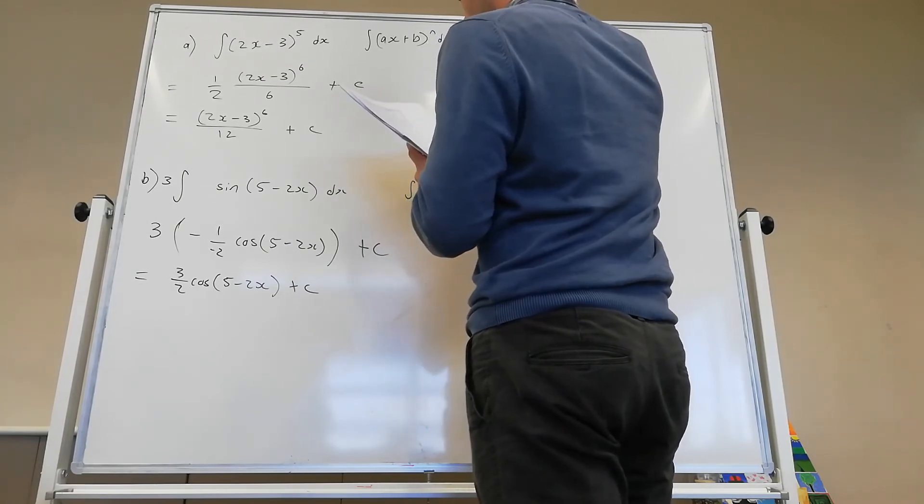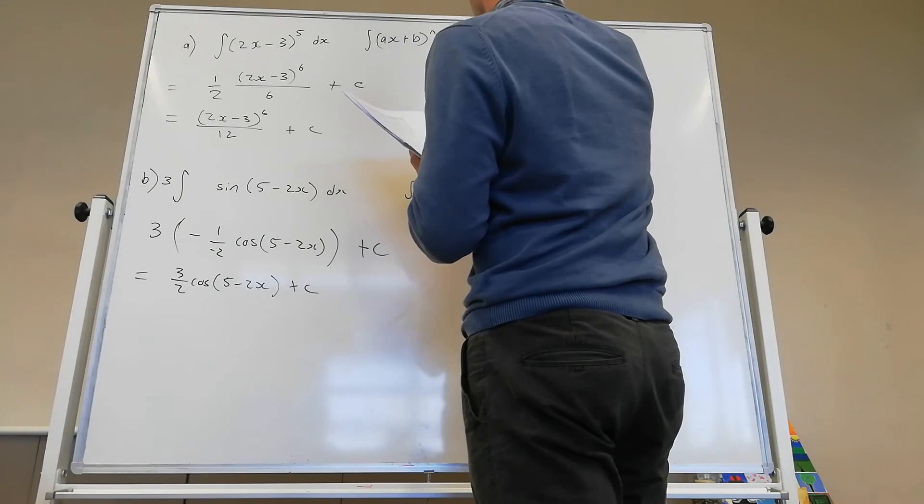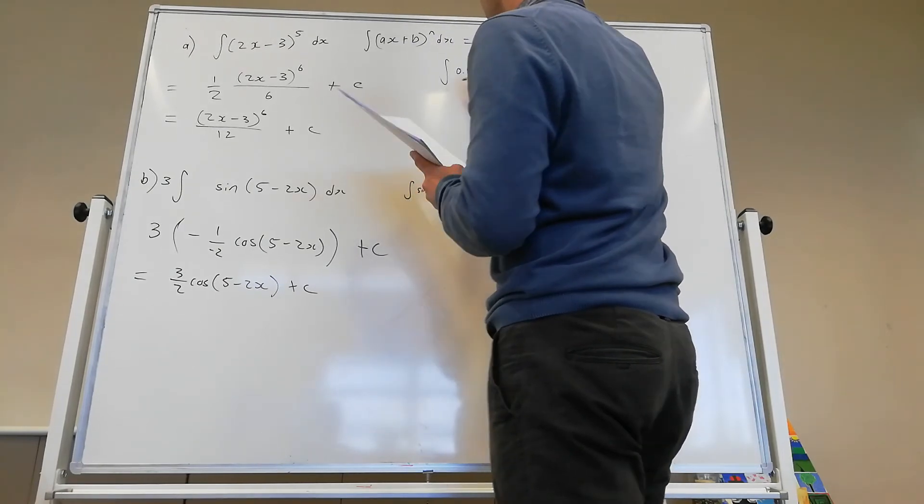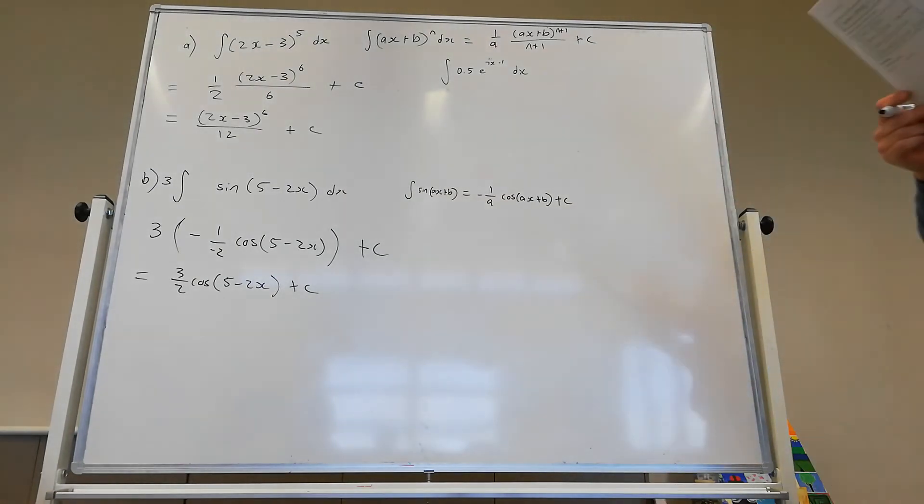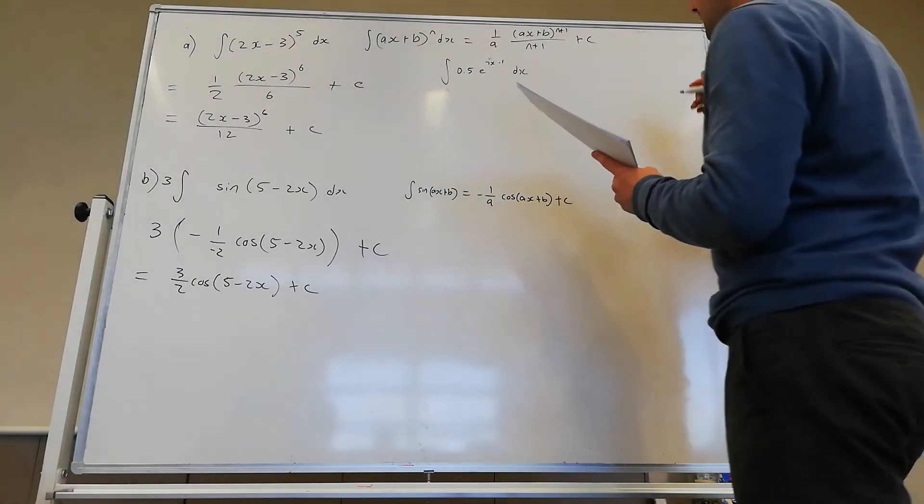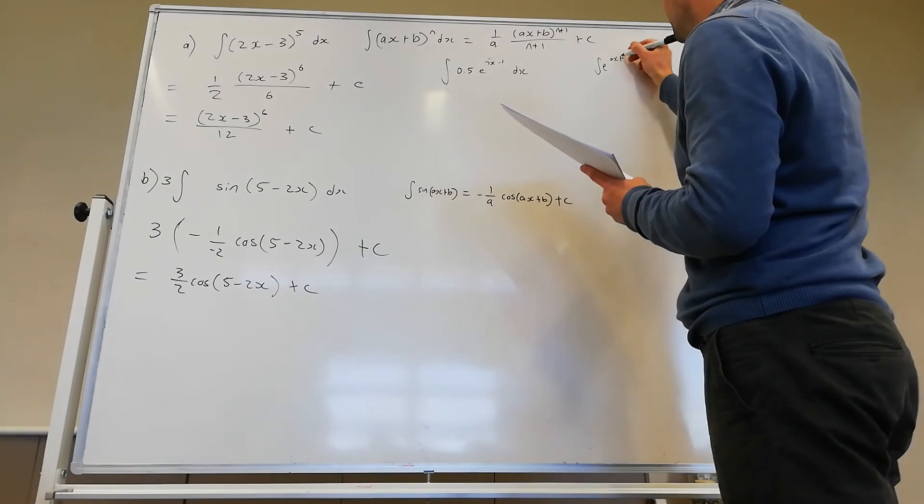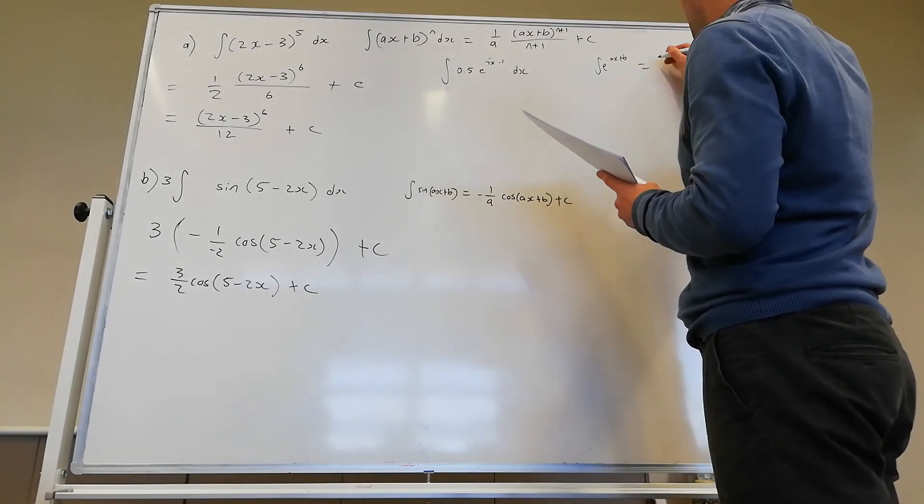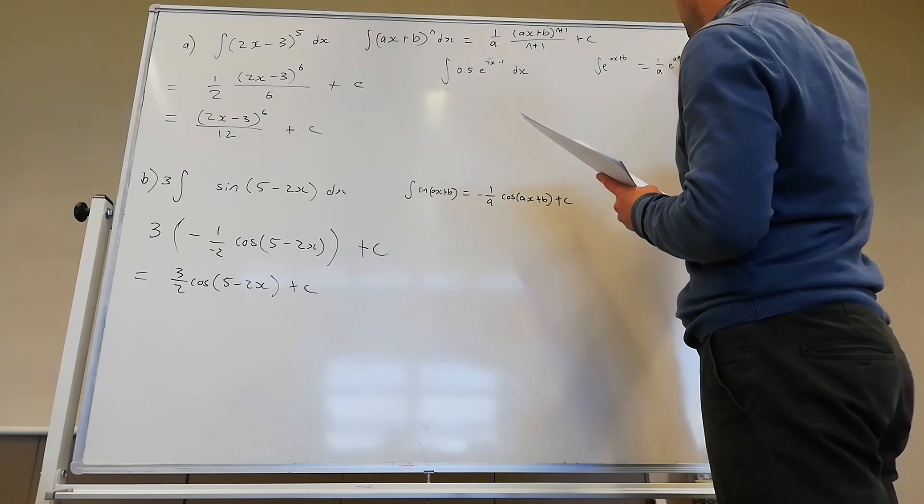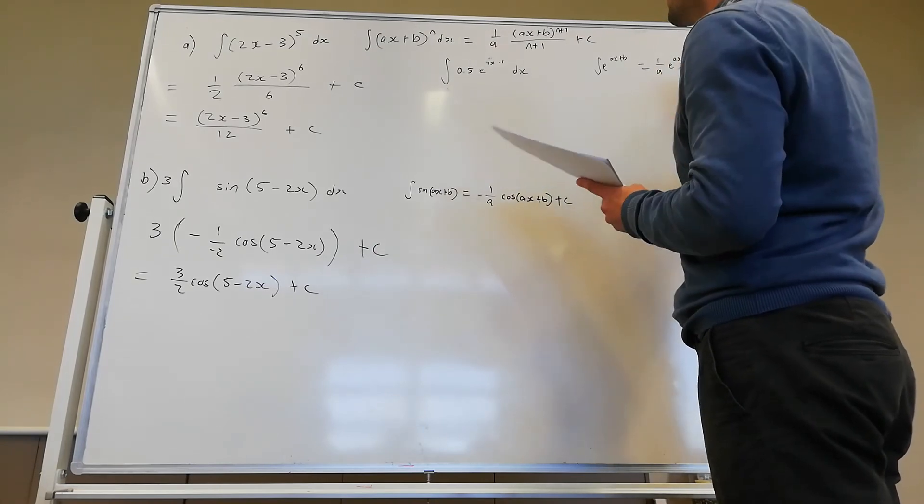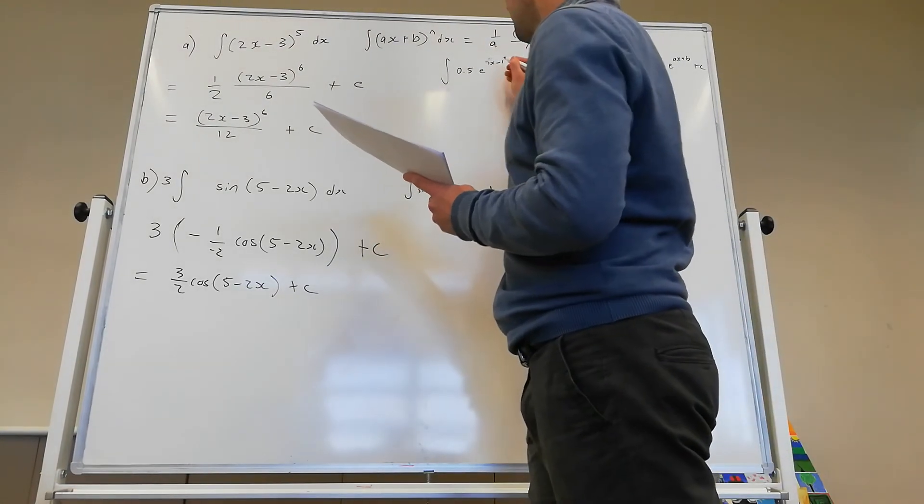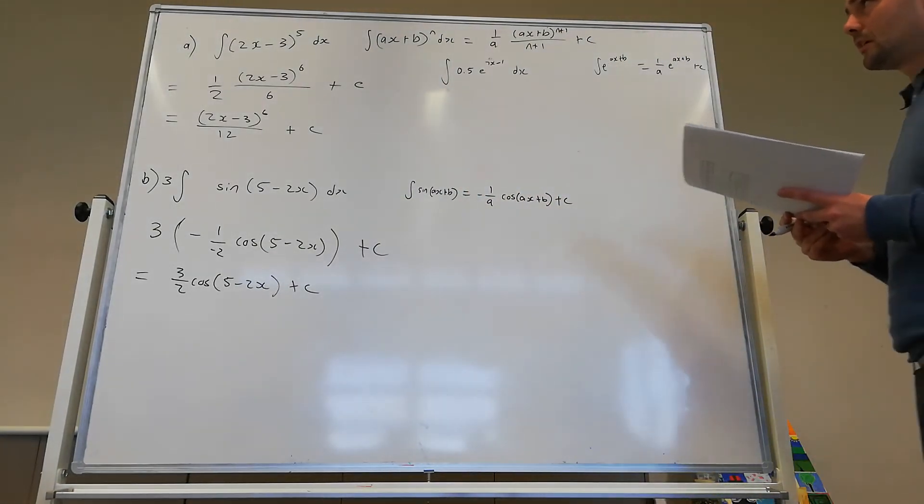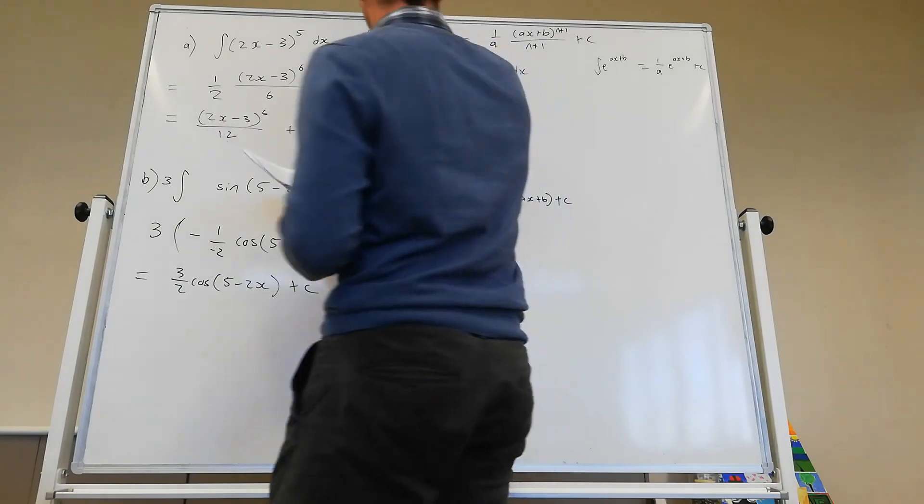e to the power of 7x take 1. Okay, okay. So here we've got the integral of e to the ax plus b. Yep. And so that will be 1 on a, e to the ax plus b plus c. That says 7x take 1.